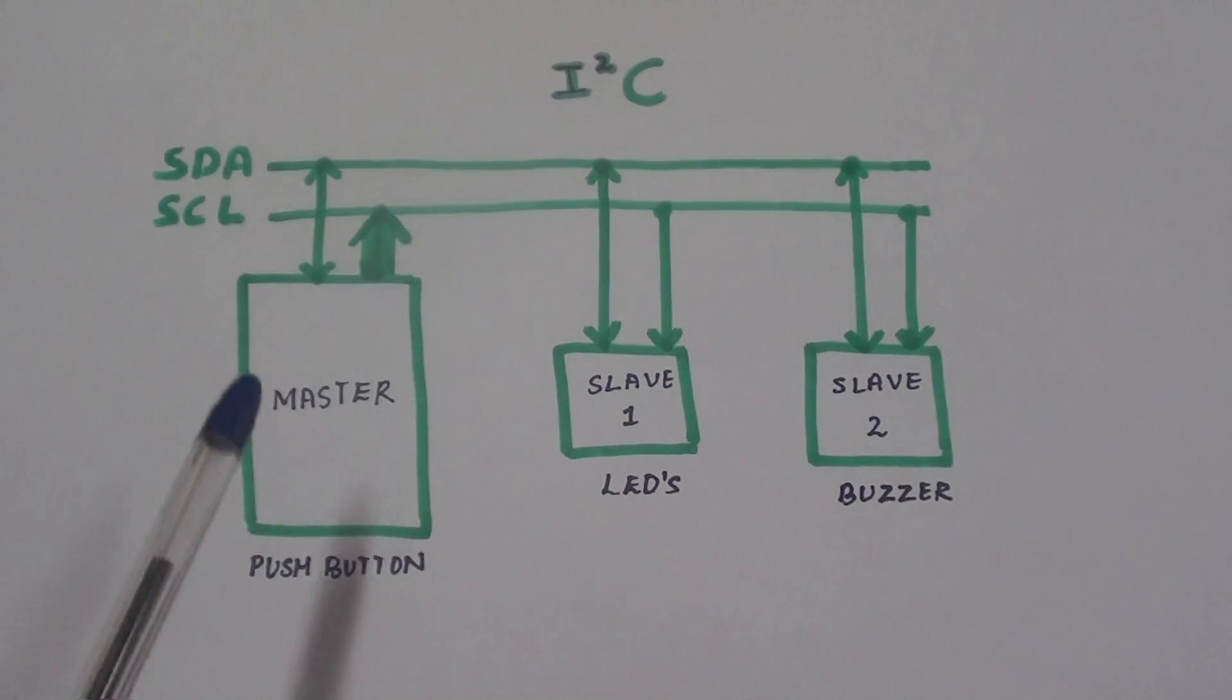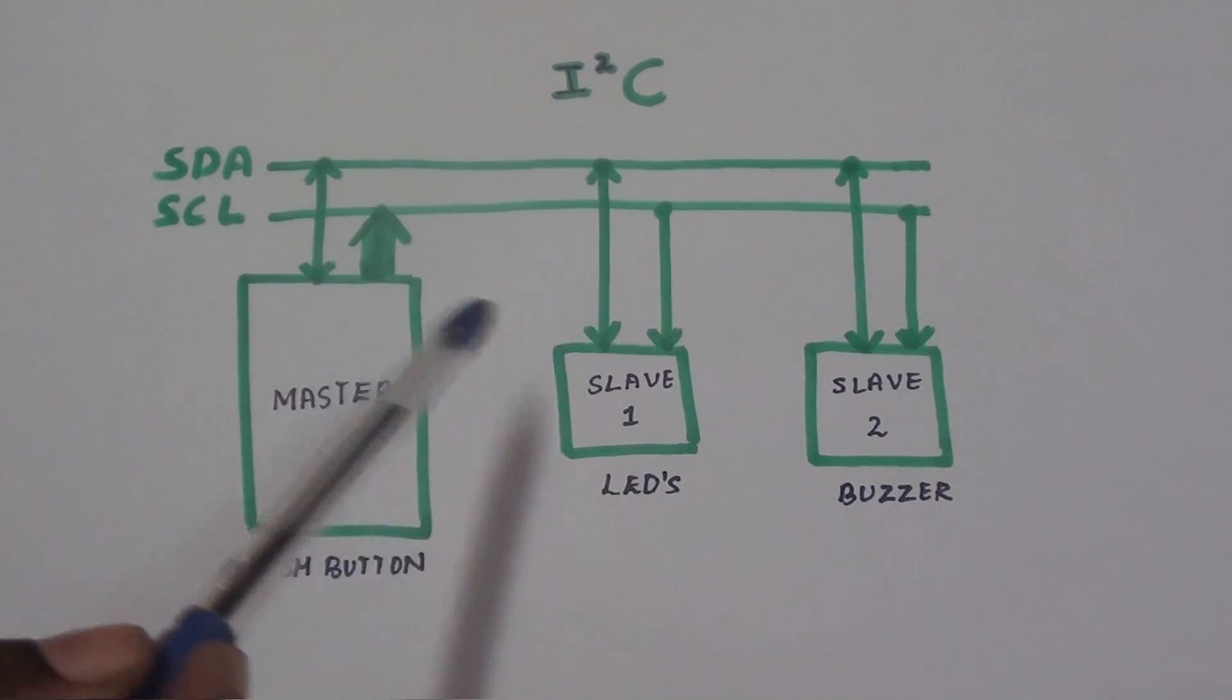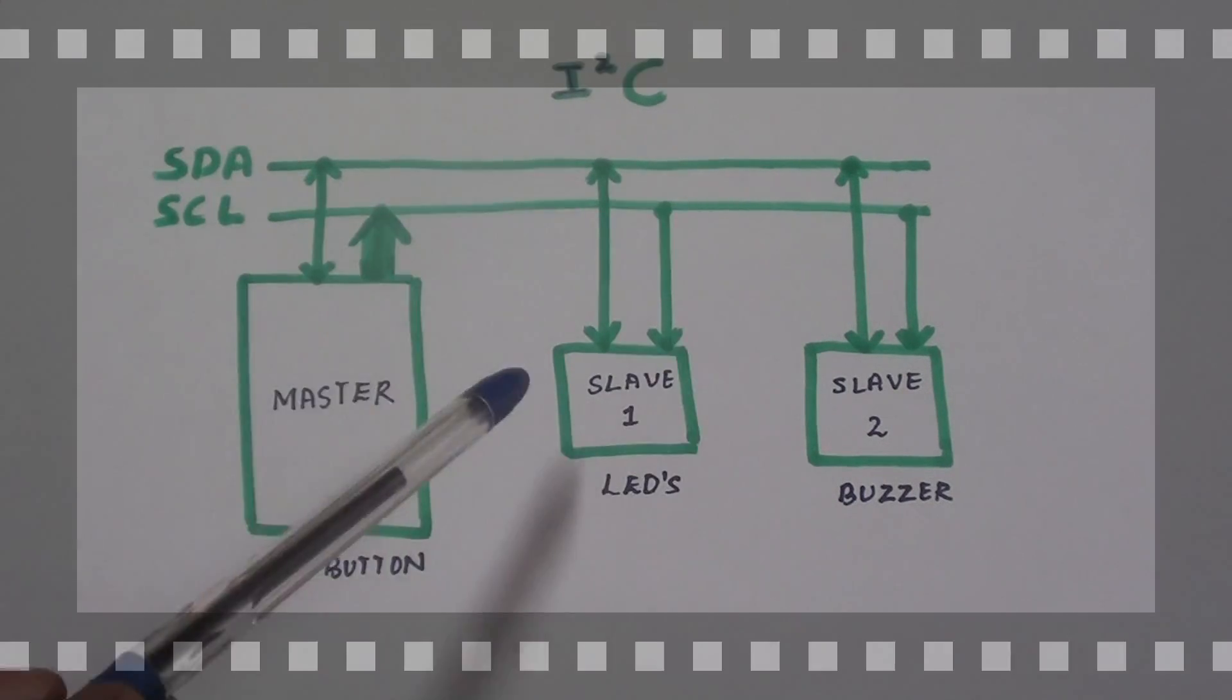Here I have used three Arduino boards. One is for master and other two for slaves. Here SCL is provided by the master to the slaves and SDA is bi-directional for both master and slave.